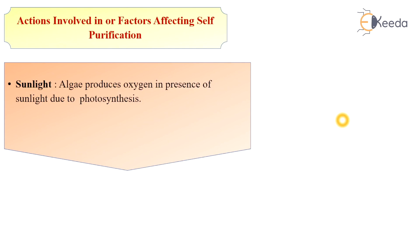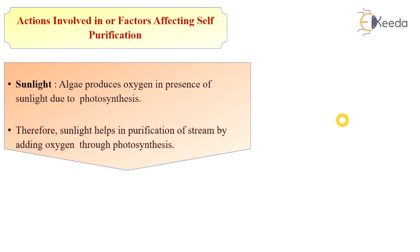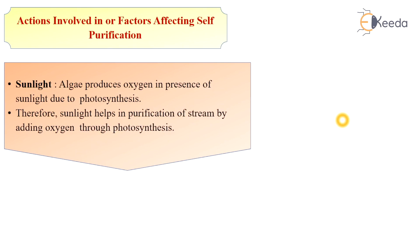Algae produces oxygen in the presence of sunlight due to photosynthesis. Therefore, sunlight helps in purification of the stream by adding oxygen through the photosynthesis process.